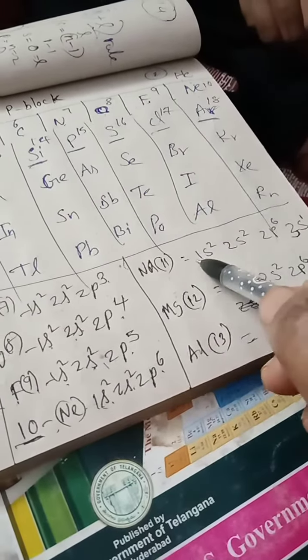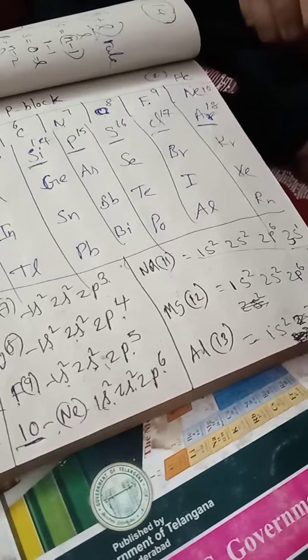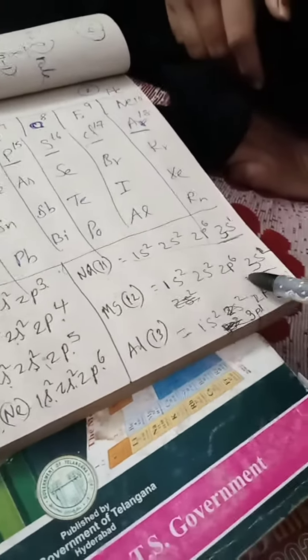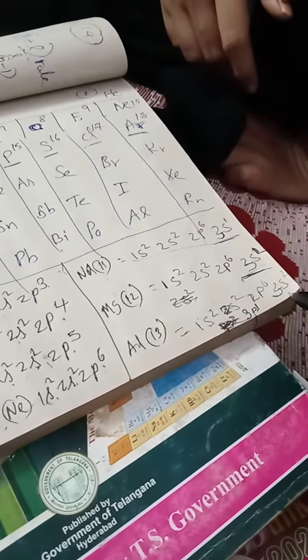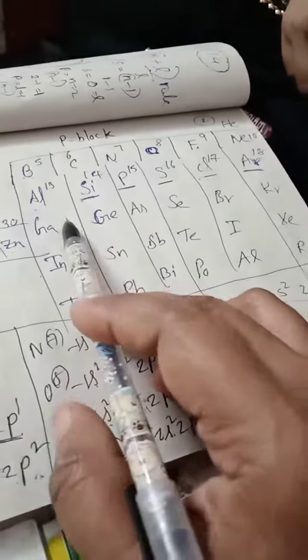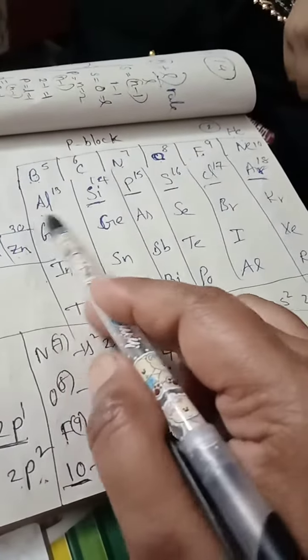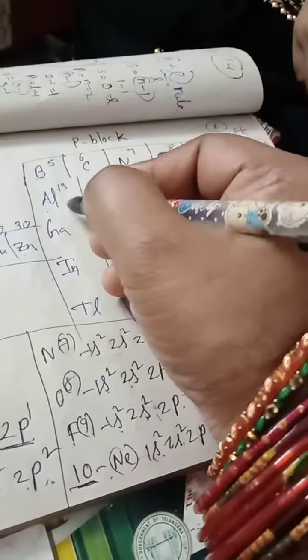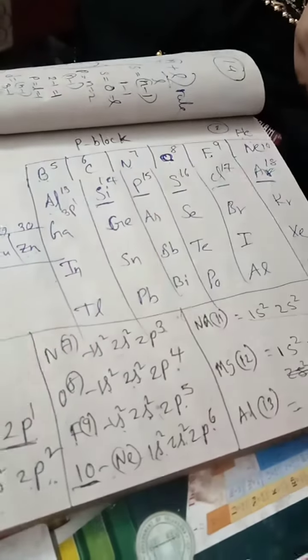Magnesium: 3s². Aluminium: 3s², after filling we go to the p-block elements. Aluminium: 3p¹.